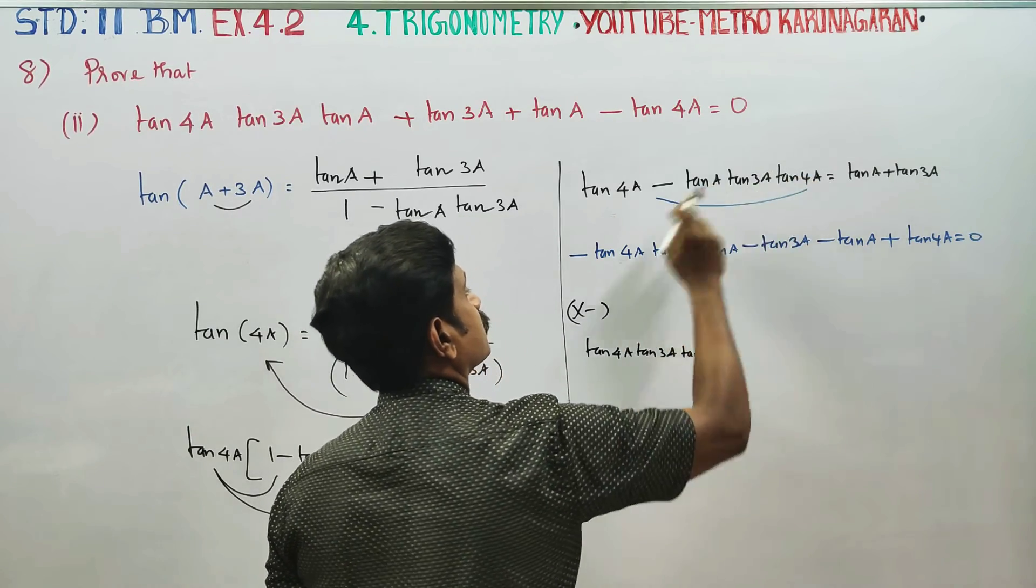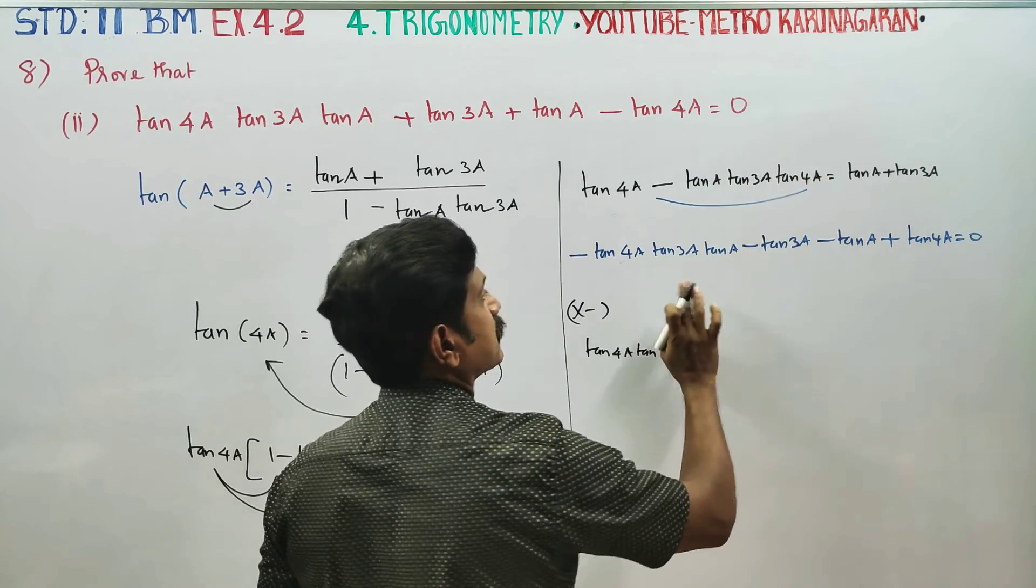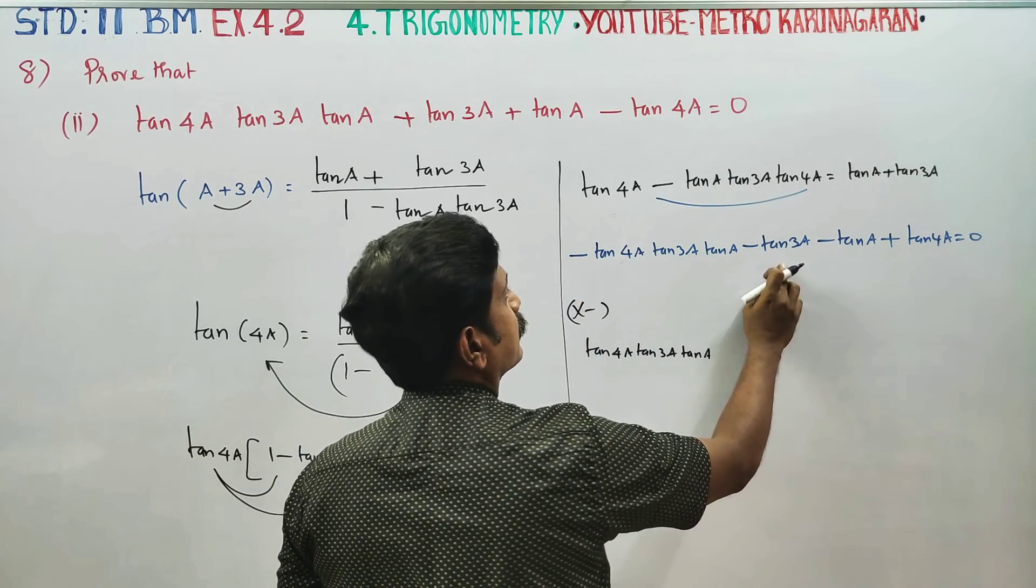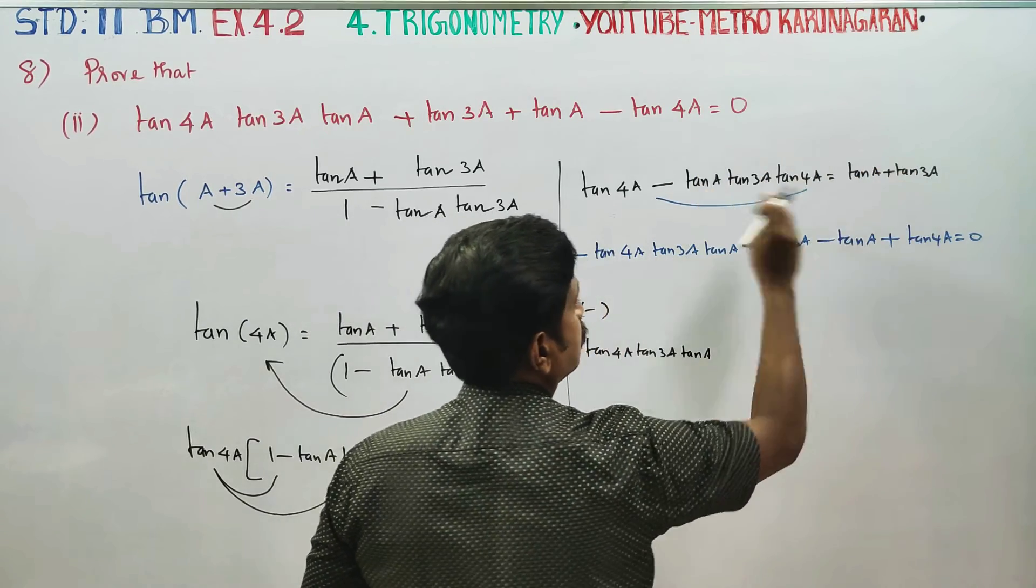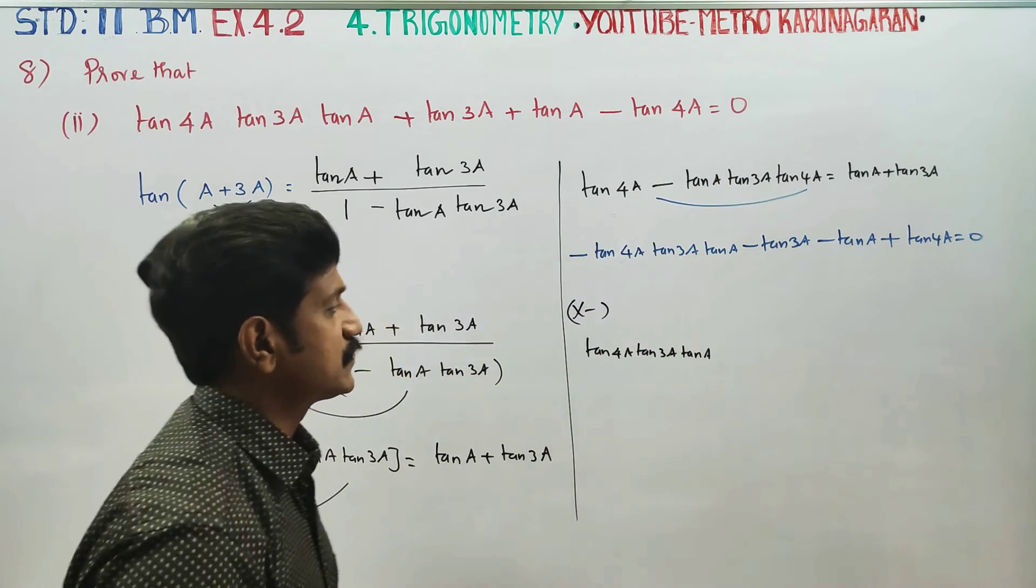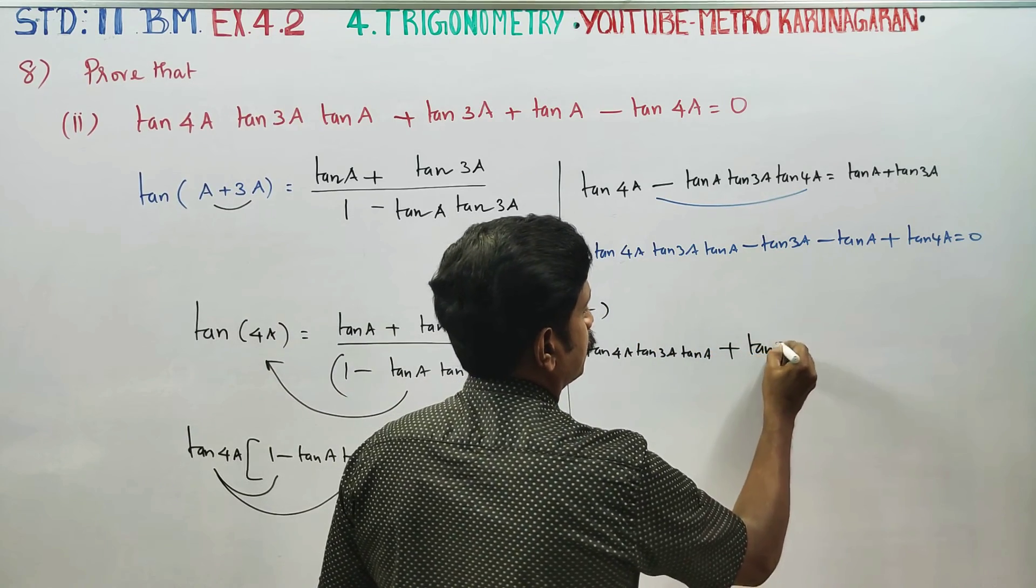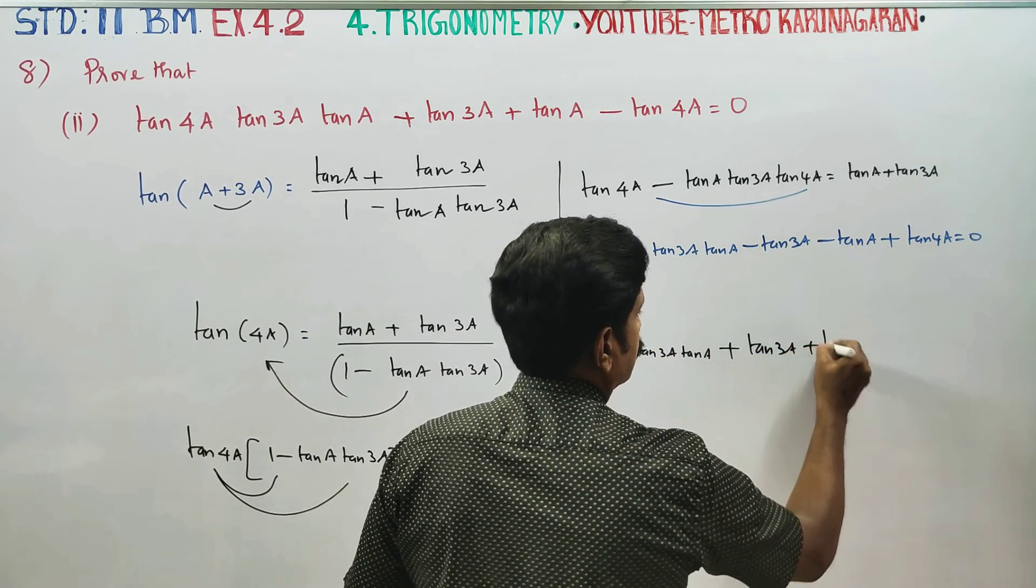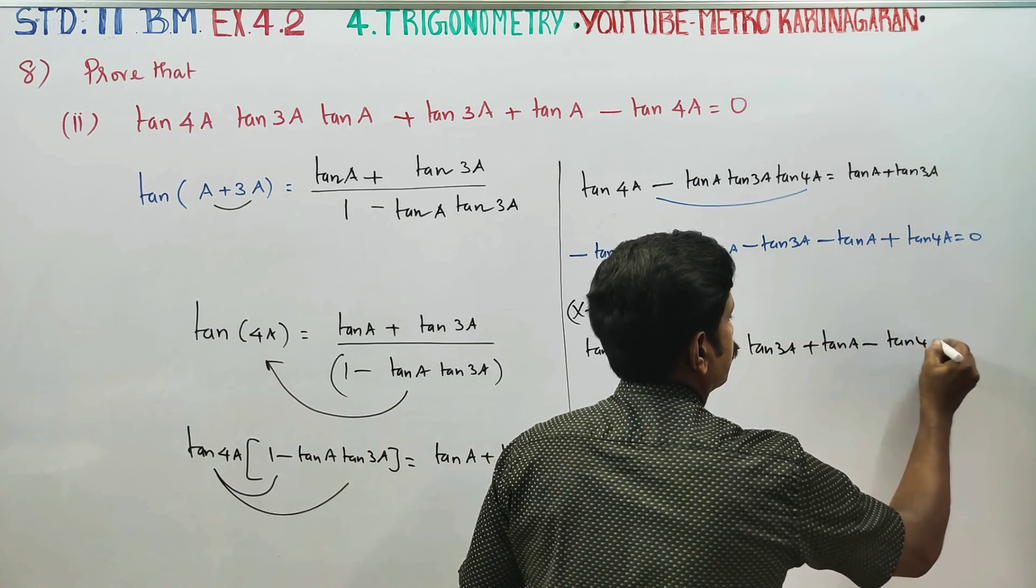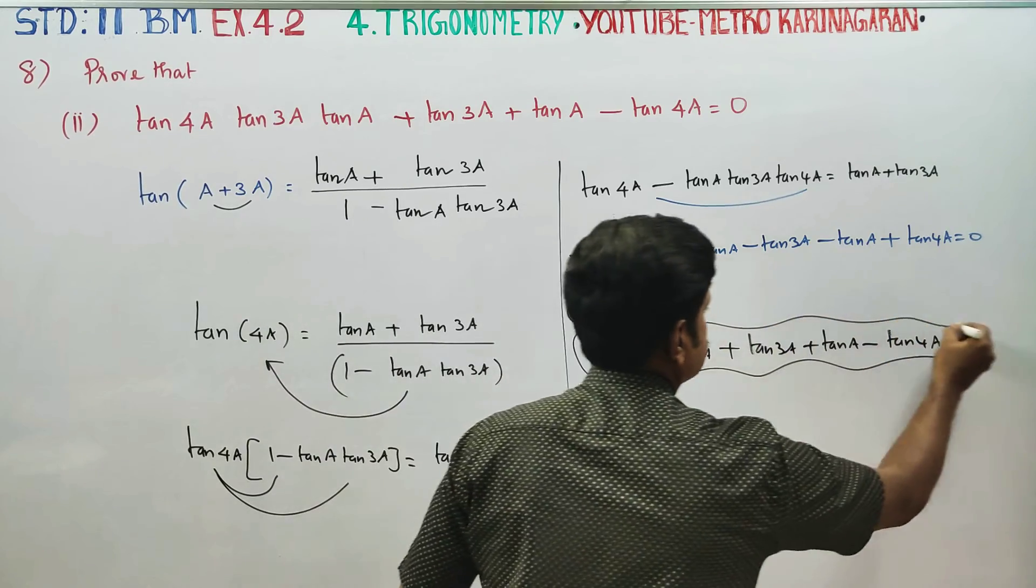Tan 4A in front and back cancels. Tan 3A cancels. Minus tan A cancels. All terms cancel. This is equal to 0. Tan 4A equals 0 is your final answer.